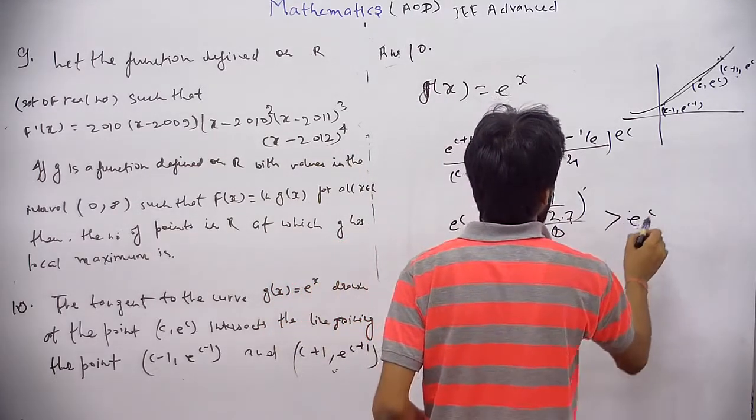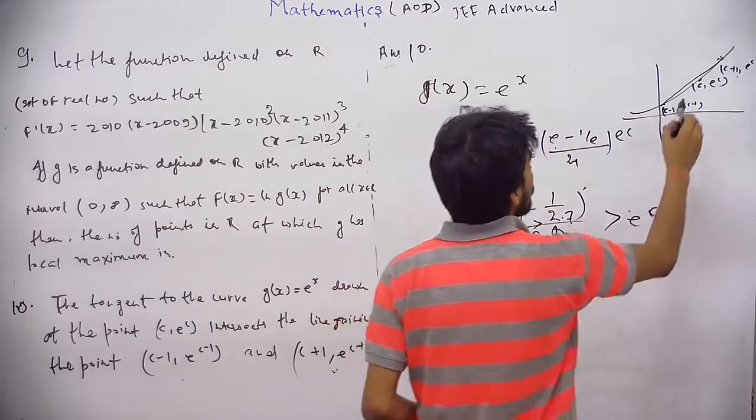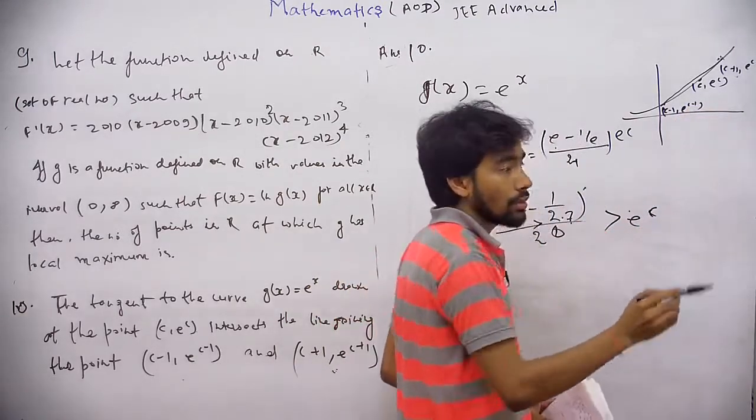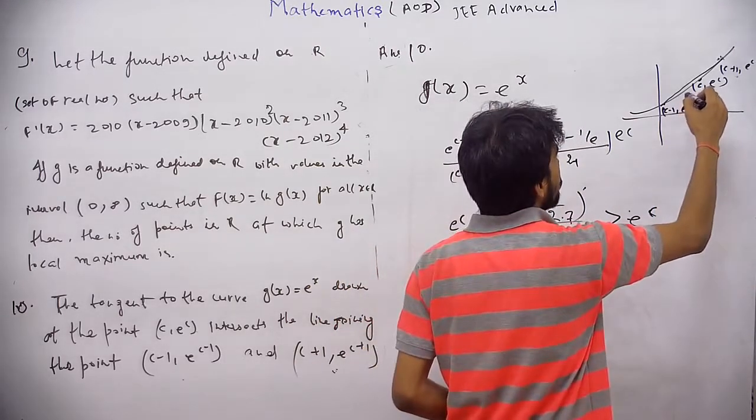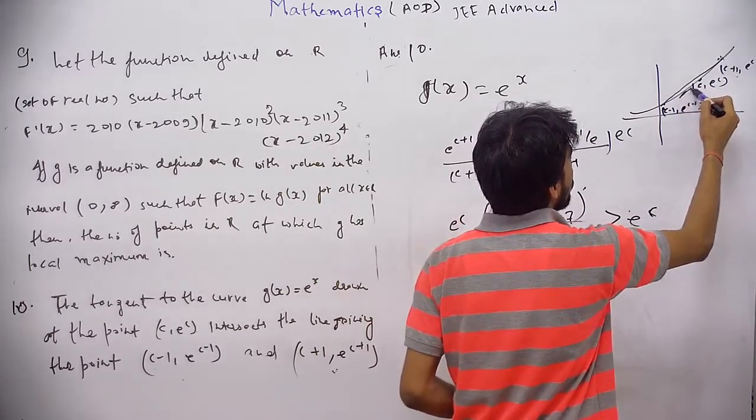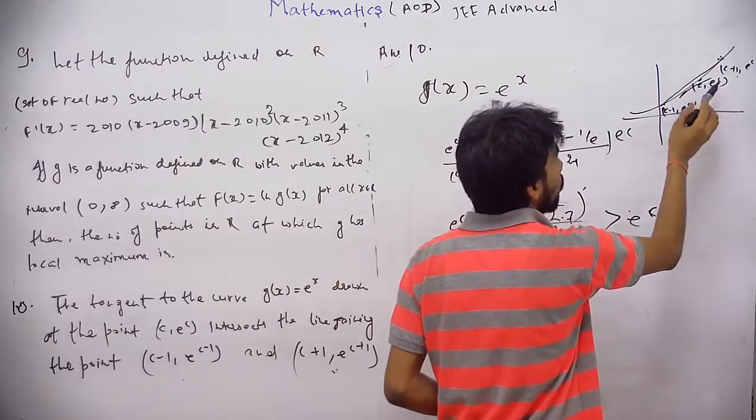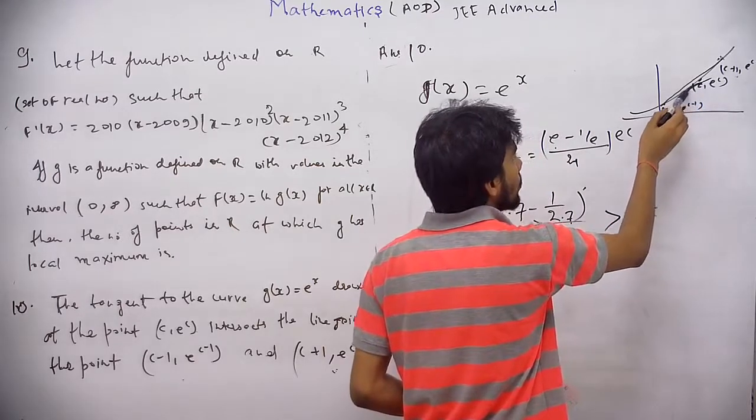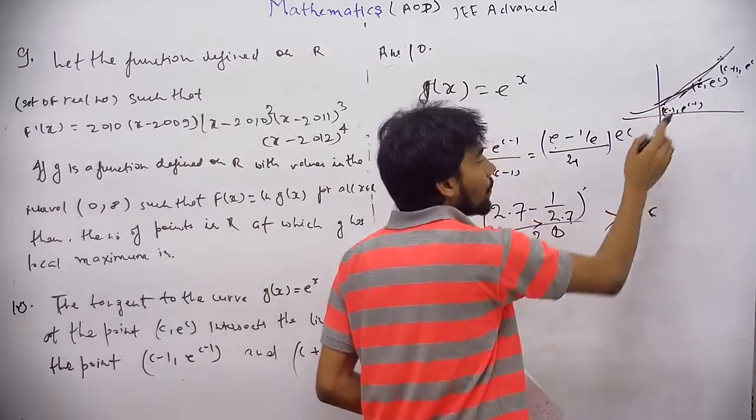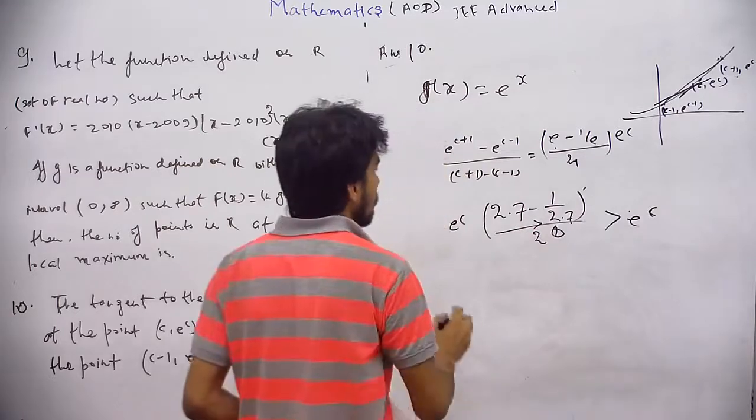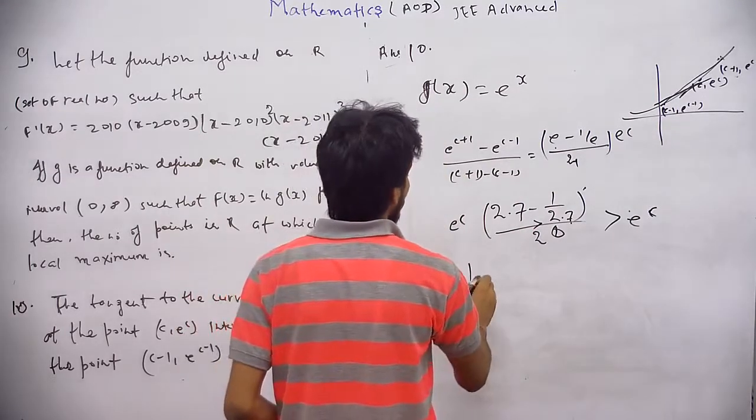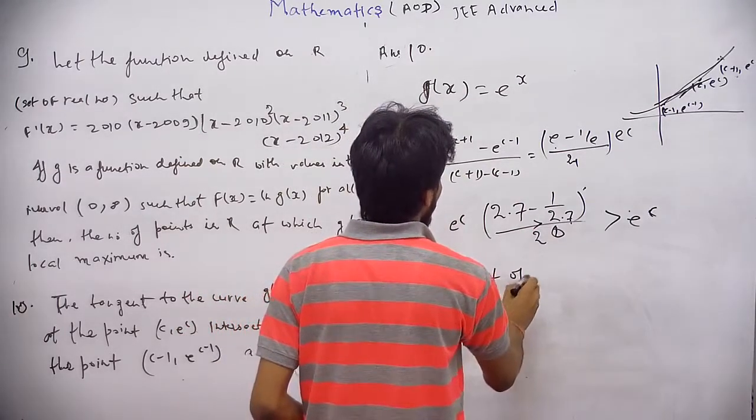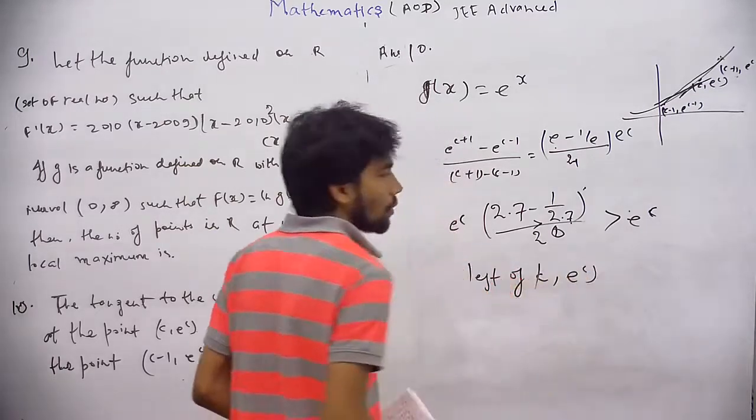Then this will be greater than e^c. This means that the tangent drawn at this point have less slope. So it will intersect at left of c. So it will intersect at left of c. Okay. Easy, okay?